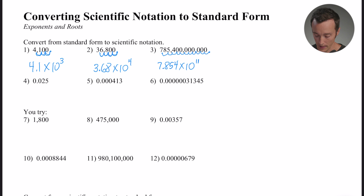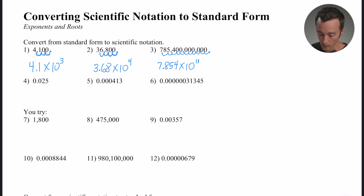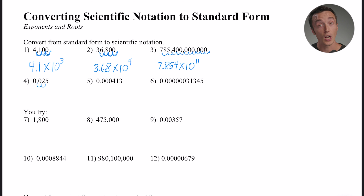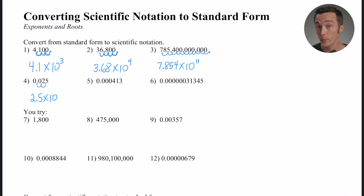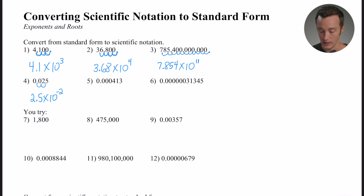What about really small numbers — numbers less than one? Number four is a good example: 0.025. Moving the decimal one place gives 0.25 — still not between one and ten. Moving it another place gives 2.5, which is between one and ten. So it's 2.5 times 10, and I moved it two places. Since 0.025 is a small number, the exponent is negative two.